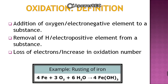Similarly, if we want to define it in terms of electropositive element, then removal of any electropositive element. And if we talk about electropositive element, hydrogen is the best example. So removal of hydrogen from a substance results in oxidation, or removal of any electropositive element from a substance results in oxidation. Please get this clear idea that it is the addition of oxygen or electronegative element to a substance, or the removal of hydrogen or any electropositive element from a substance.